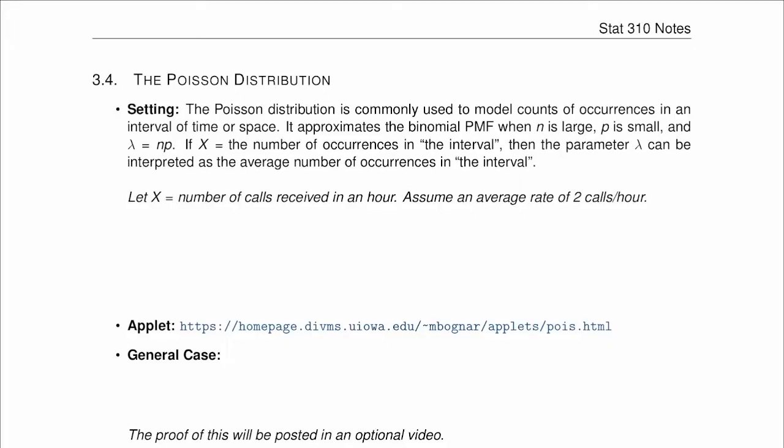Now, we'll finish our review of discrete random variables with the Poisson distribution. The Poisson distribution is one of the most important distributions and is commonly used to model counts of occurrences in an interval of time or space.